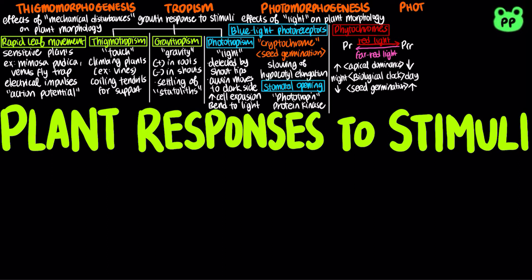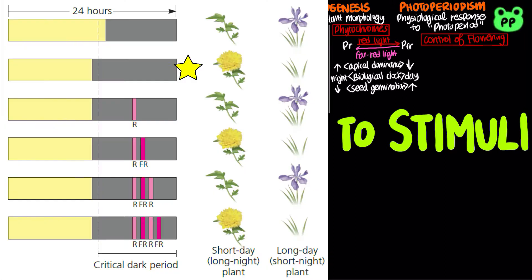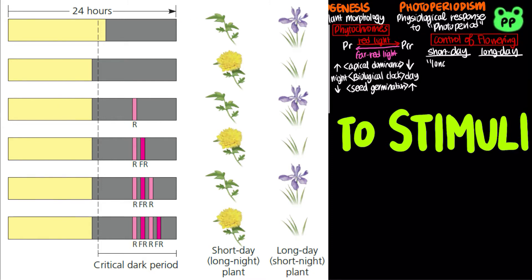Photoperiod refers to the relative length of night and day, and it is the environmental stimulus plants use most often to detect the time of year. Photoperiodism refers to a plant's physiological response to photoperiod, with an example being the control of flowering. Short-day plants flower when the light period is shorter than a critical length, whereas long-day plants flower when the light period is longer than a critical length. It is important to note that flowering and other responses to photoperiod are actually controlled by night length and not day length.